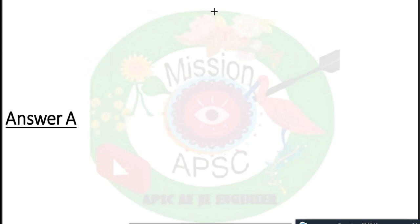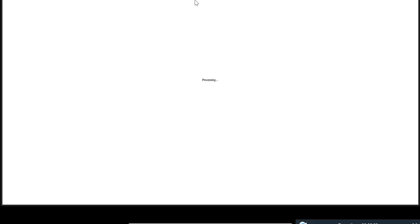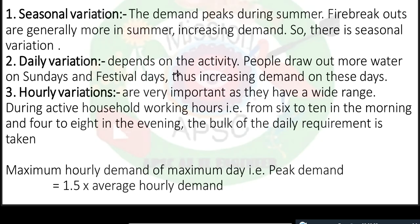Next question: The hourly variation factor is — is it 1.5, 1.8, 2, or 2.7? Let's see the variations in water demand.